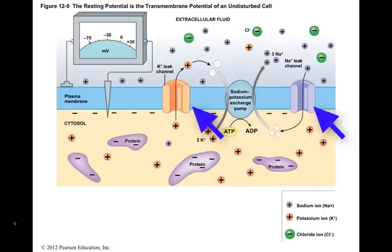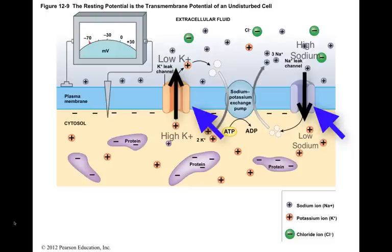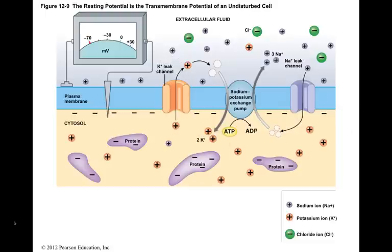These leak channels are always open and the movement of ions through them is a passive process, because the ions diffuse down their concentration gradients — that is, from higher ion concentration to lower ion concentration. The permeability of the membrane varies by ion. It is easier for potassium to diffuse out of the cell through leak channels than it is for sodium to enter into the cell through leak channels.